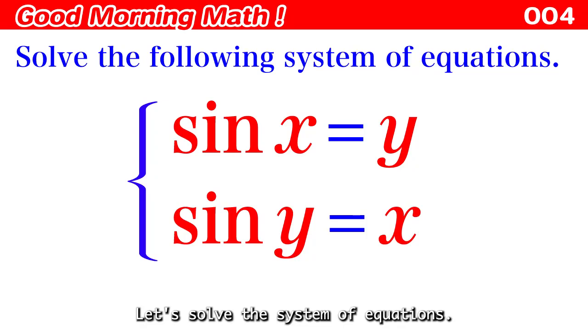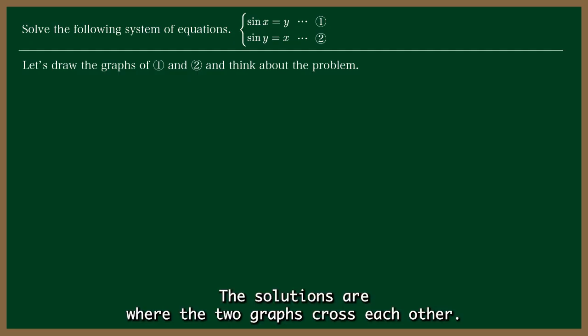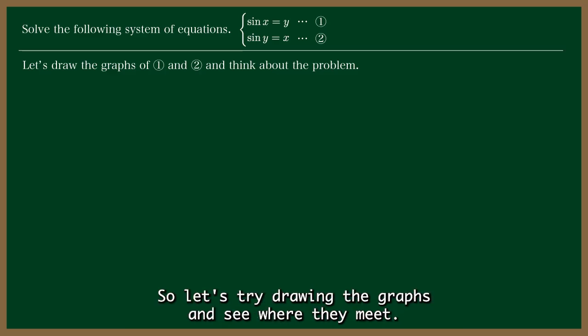Let's solve this system of equations. Sine of x equals y and sine of y equals x. The solutions are where the two graphs cross each other. So let's try drawing the graphs and see where they meet.